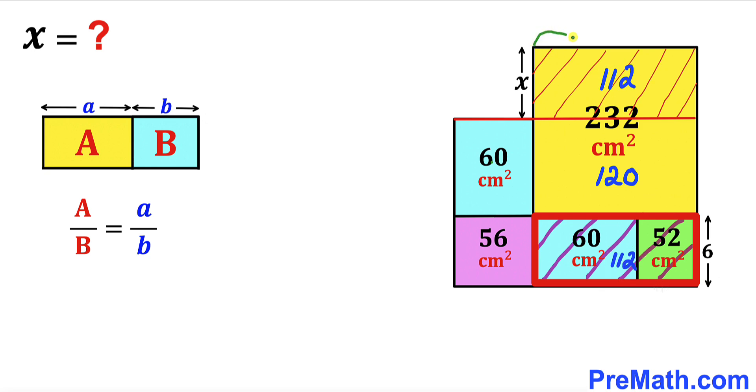And moreover this side length is exactly same as this side length. So therefore we conclude that this side length has got to be exactly same as this one. If this is a 6 this x is going to be equal to 6 centimeter as well.